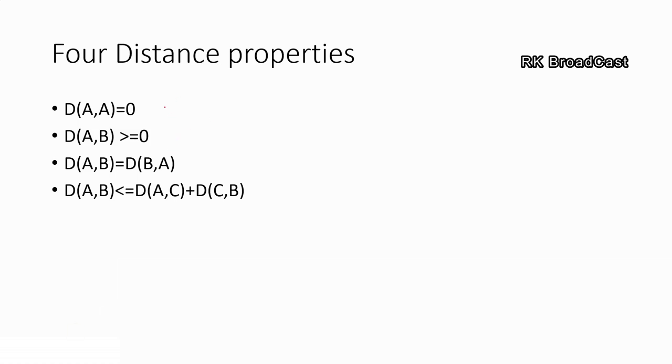Let us see the first one. The distance between point A to the same point A indicates the distance from the point A itself is always zero. This indicates the identity property.